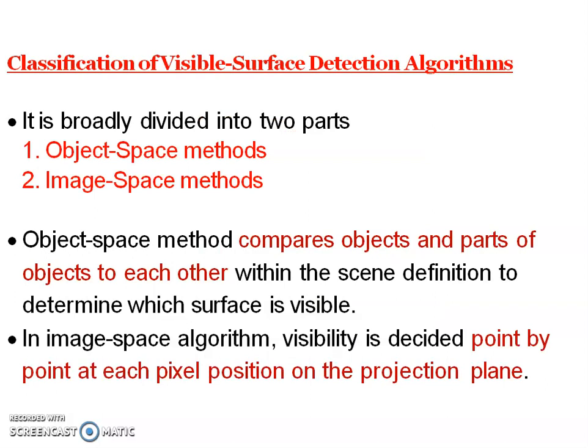There are mainly two types of surface detection algorithms. First one is object space method and second one is image space method. In the case of object space method, it compares the main object and the parts of the objects to each other, comparing objects within the scene definition to determine which surface is visible and which is not visible. In image space algorithm, visibility is decided point by point at each pixel position on the projection plane.